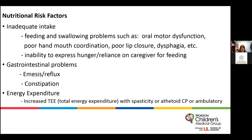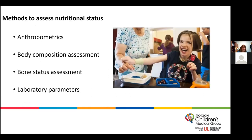In this population, nutritional risk factors can be related to inadequate intake — such as feeding or swallowing problems like oral motor dysfunction, poor lip closure, or dysphagia. Patients may also be unable to express hunger if they're nonverbal and rely on caregivers for feeding. Other risk factors include gastrointestinal problems like emesis, reflux, or constipation, and increased energy expenditure with certain CP types.